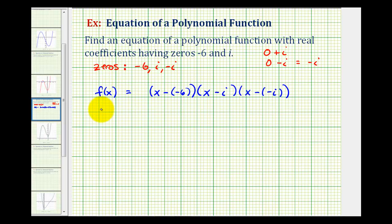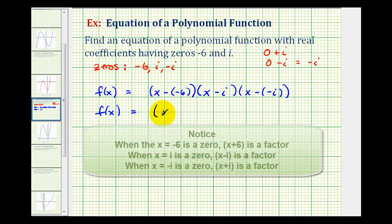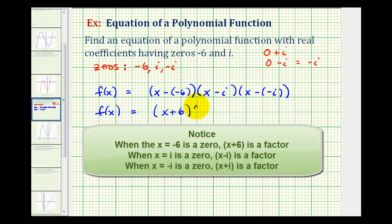We don't need a constant here because our binomial factors do not contain any fractions. So our function f(x) would have a factor of x plus six, x minus i, and x plus i.